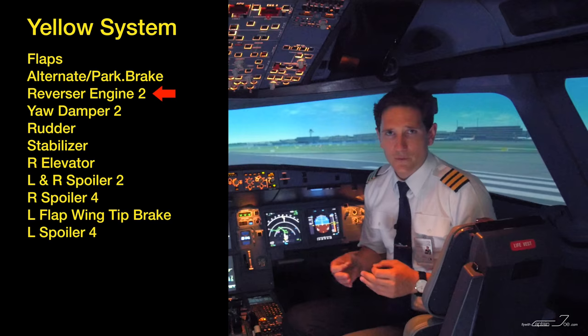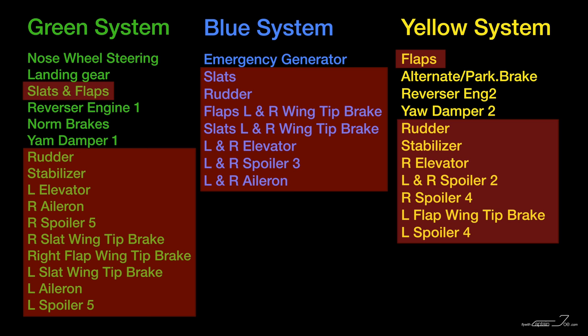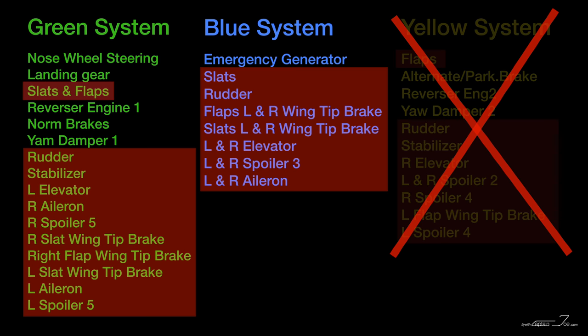Most importantly, all three systems provide pressure for the flight control actuators — the rudder, the stabilizer and elevators, slats, flaps, and ailerons. Meaning if one system were to totally fail, there are two more hydraulic systems for backup, making the system very reliable and redundant.